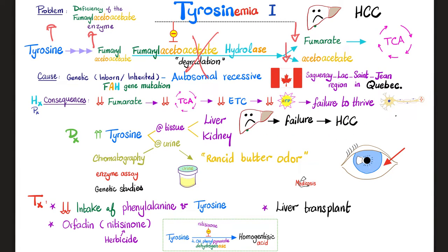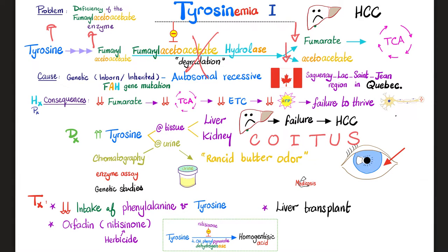Another story — pathology is about concepts. Accumulation of fumarylacetoacetate, tyrosine, and phenylalanine in the kidney can also lead to kidney problems. You can also argue that the kidney disease here is due to hepatorenal syndrome. Possible.